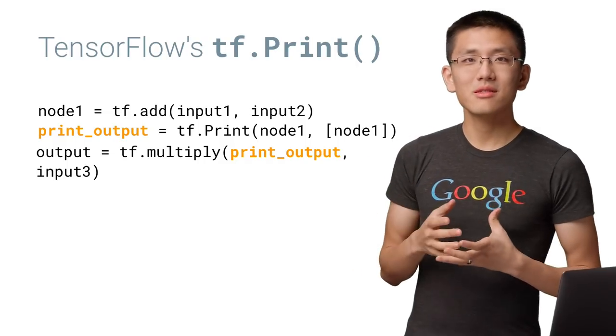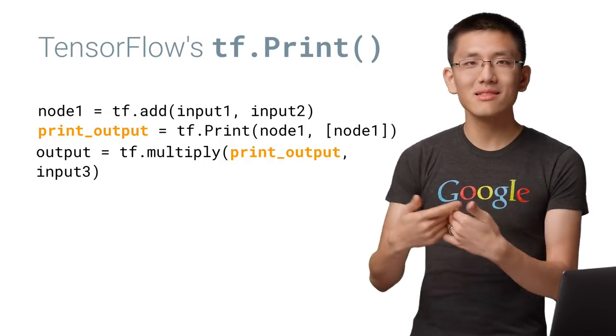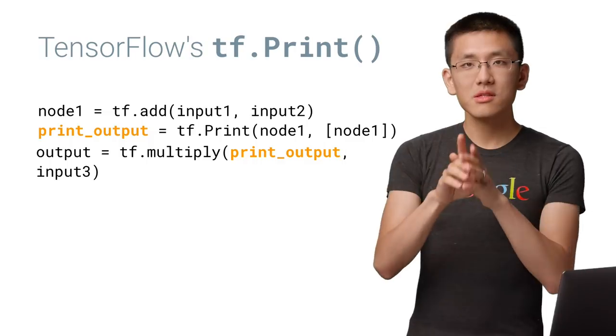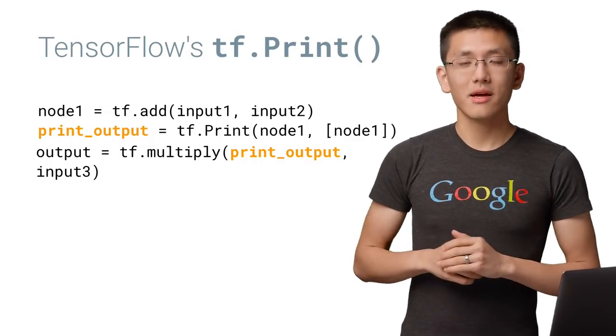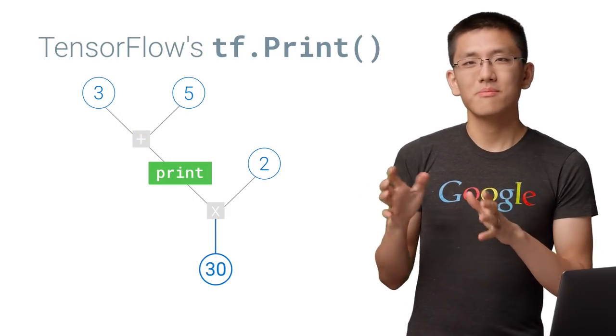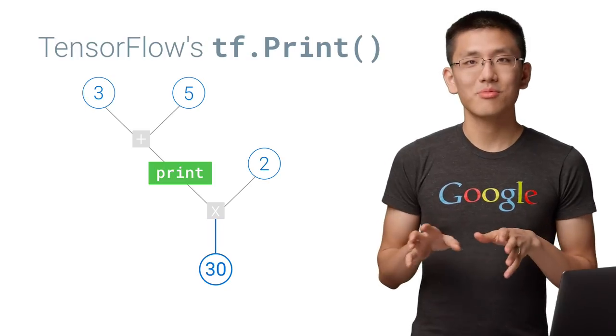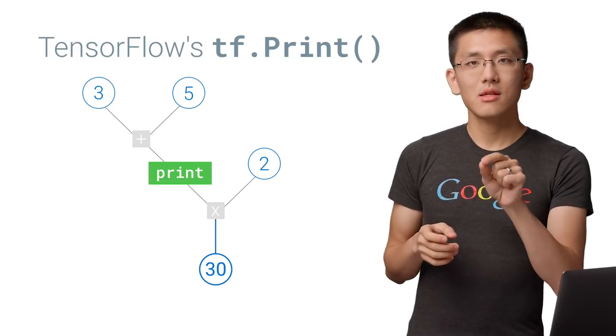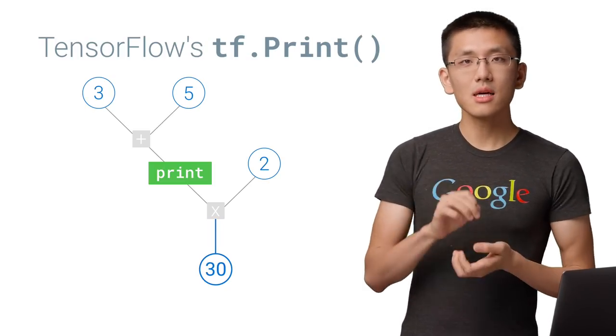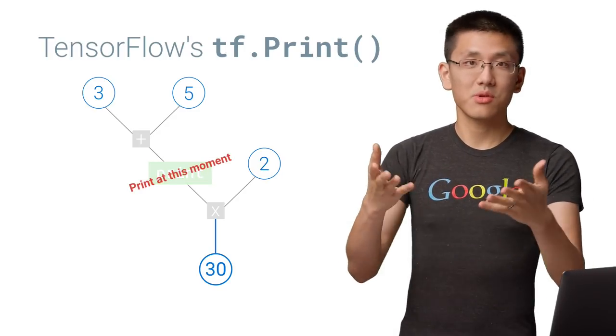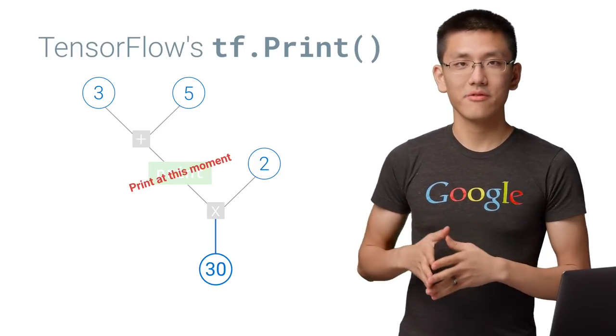While the print statement does no computation and just passes the value onward, it will print the desired node as a side effect. Another behavior that's a bit unlike what we're used to seeing in a print statement is that the print node that we introduce is merely locking in when the print statement will happen, namely when the node is reached in the computational graph.